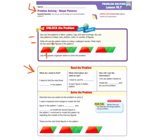What do I need to find? I need to find the next three figures in the pattern. On that line you should be writing figures in the pattern. What information do I need to use?